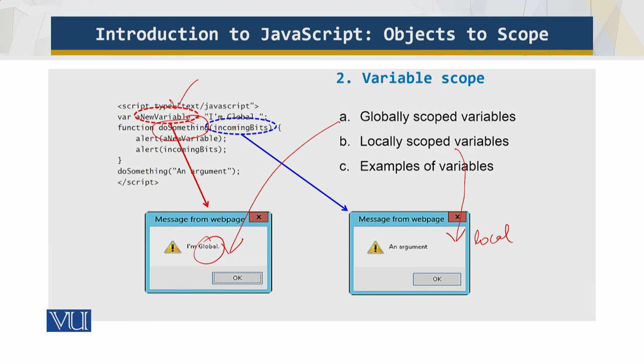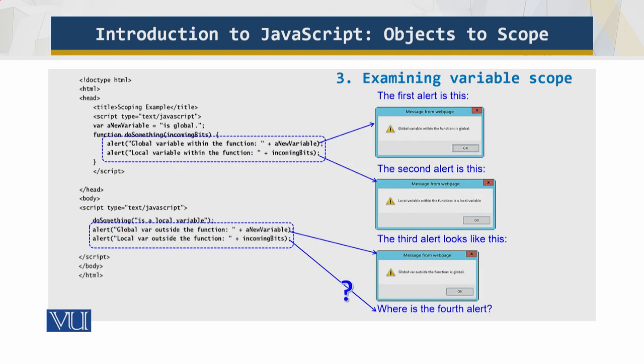Now let's look at some more details and examine the variable scope example. You can edit your file using whatever editing material you're using, but let's look at the results. Here we have one, two, three, and four - we have four alerts in the code.